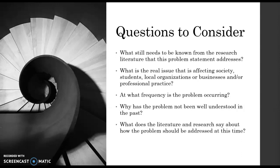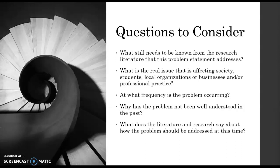What does the literature say about how the problem should be addressed? This goes back to future recommendations for the research. As you're reading and synthesizing, ask yourself these questions — it will help you identify the problem space, which will be comprised of: here's what we know and what we don't know about a topic, here's how we came to understand all of that, and these are the theories, the designs, the methods, the instruments that were used to get to this point. That tells us what we don't know yet and what this study will address.